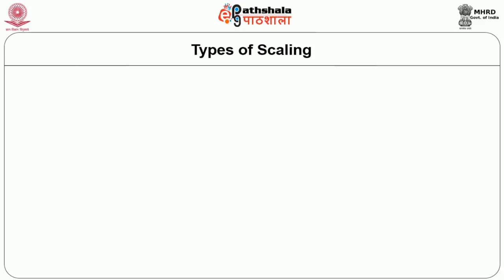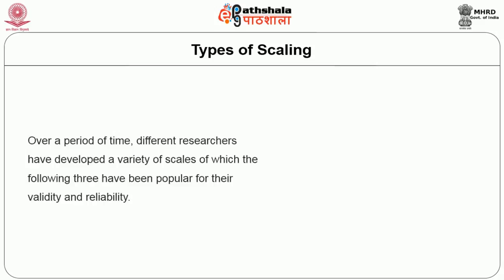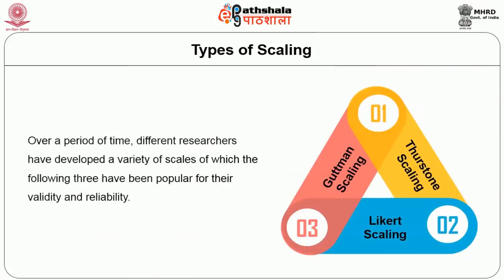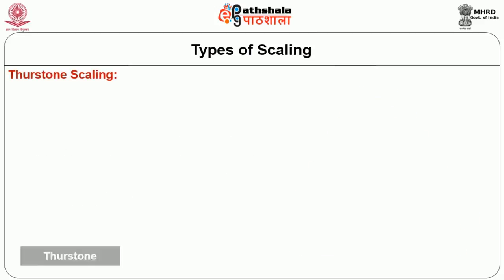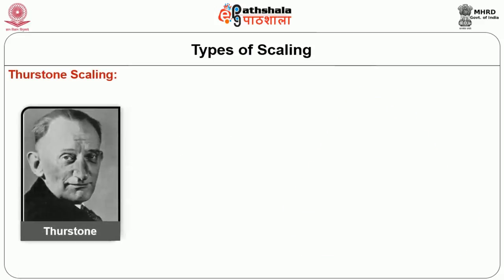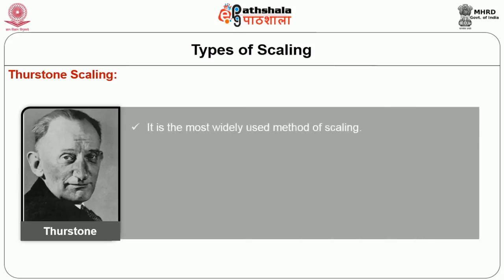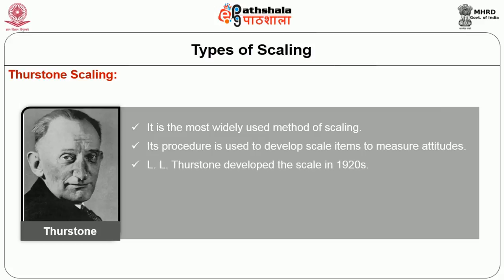Let us look at the different types of scale. Over a period of time, different researchers have developed a variety of scales, of which three are popular for their validity and reliability: Thurston scaling, Likert scaling, and Guttman scaling. Let us look at Thurston scaling first. It is the most widely used method of scaling, and its procedure is used to develop scale items to measure attitudes.